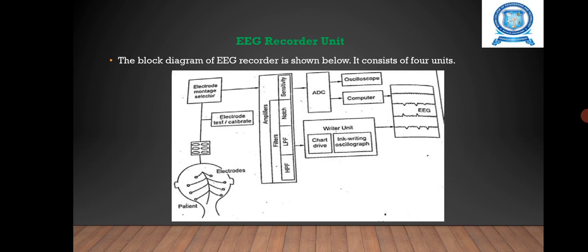Then we have the output unit. Microprocessors now employed in most commercially available EEG permit custom programming and montage selection. The system can store up to 40 hours of EEG and display on a 43 centimeter color monitor.